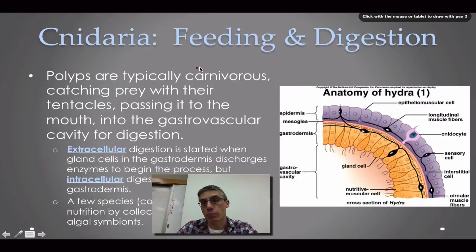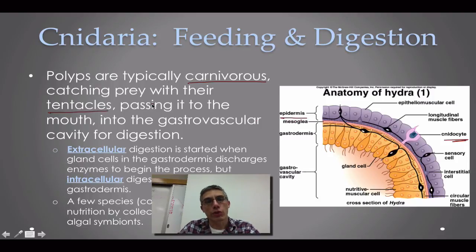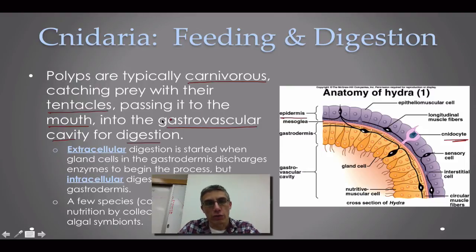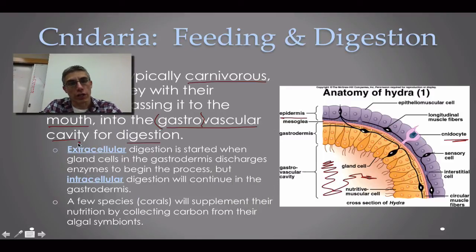All members of Cnidaria are carnivorous — they eat other animals. They catch prey with their tentacles using Cnidocytes embedded within the epidermis of the tentacle. Once prey is trapped, it's passed to the centrally located mouth and then to the gastrovascular cavity for digestion. 'Gastro' refers to digestion, and the gastrovascular cavity is visible in the diagram on the right-hand side.